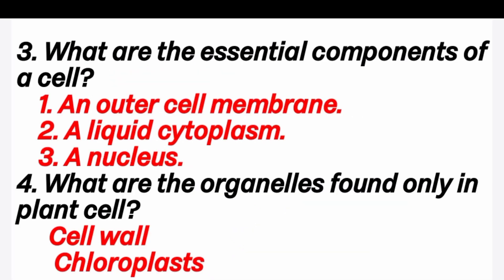Third question: what are the essential components of a cell? There are three components. First, the outer cell membrane. Second, liquid cytoplasm. Third, nucleus. Fourth question: what are the organelles found only in plant cells?